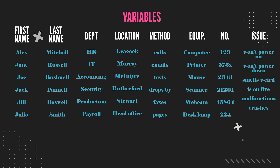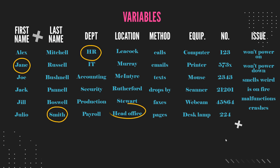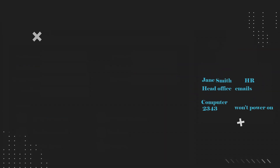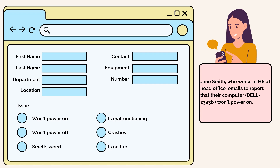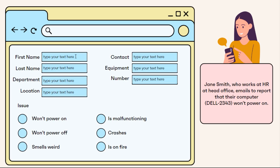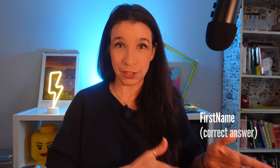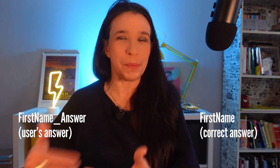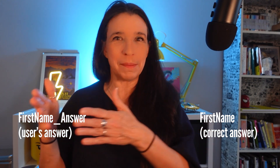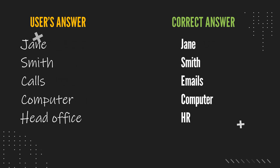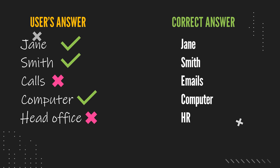Step three: populate these lists with as many elements as you like. Step four: at runtime the program randomly selects one option from each pool to create the scenario — for example, Jane Smith, who works in HR at head office, emails to report that her computer, Dell 2343, won't power on. To assess the learner's performance, we simulate the software and track what they put in. For each element, you have the variable randomly set by the program — that's the right answer — and the corresponding variable holding whatever the user enters. If all the right answers match all the user's answers, they did perfect. You can also give them a point for each one they get right, giving you a nice range of possible scores. With just six options in each pool, you get over a quarter million scenarios.